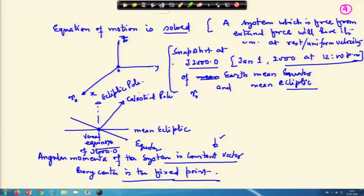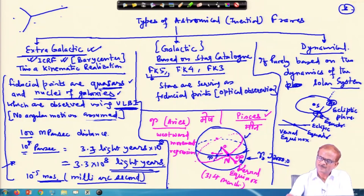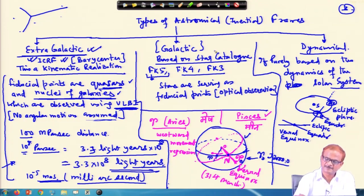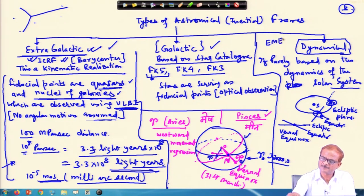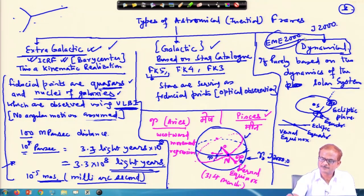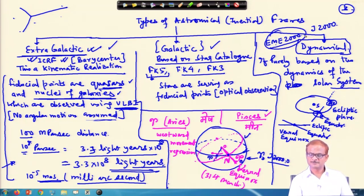In that context we were looking at various inertial reference frames which are available currently. We have termed these as the International Celestial Reference Frame, then FK5, and the dynamical reference frame. In the literature or books, FK5 and ICRS will be mentioned. The dynamical reference frame is also there and is purely based on dynamics. We can call this as the Earth Mean Equator of 2000, also written as EME 2000 or J2000. This serves as one reference frame and FK5 is another.